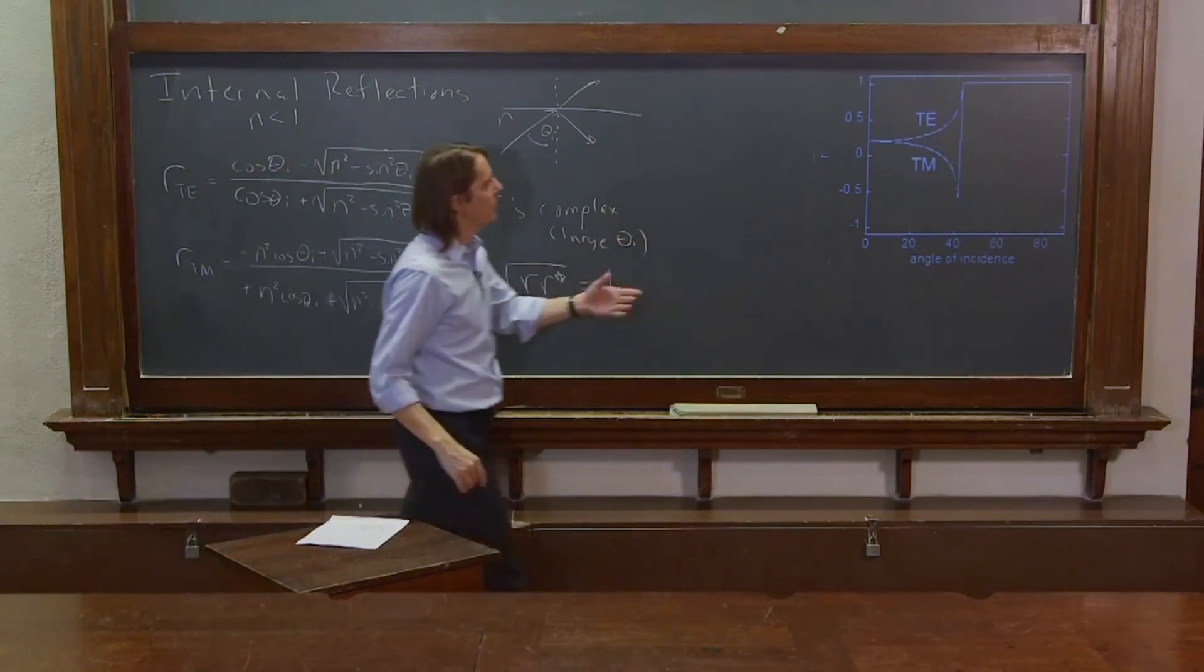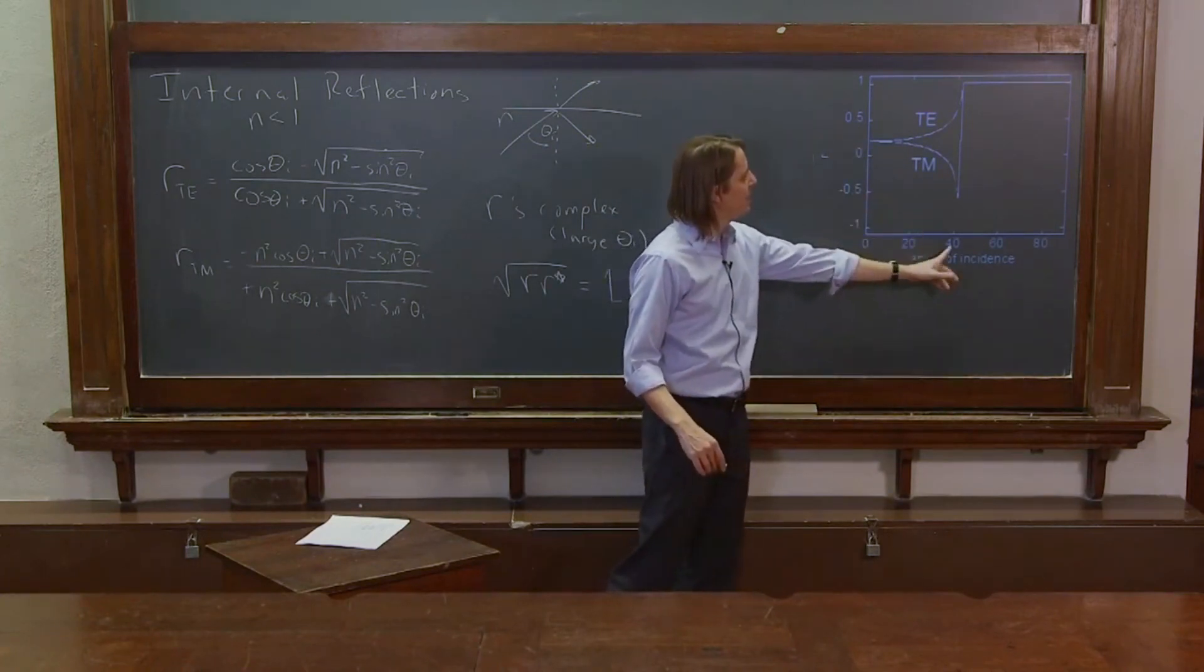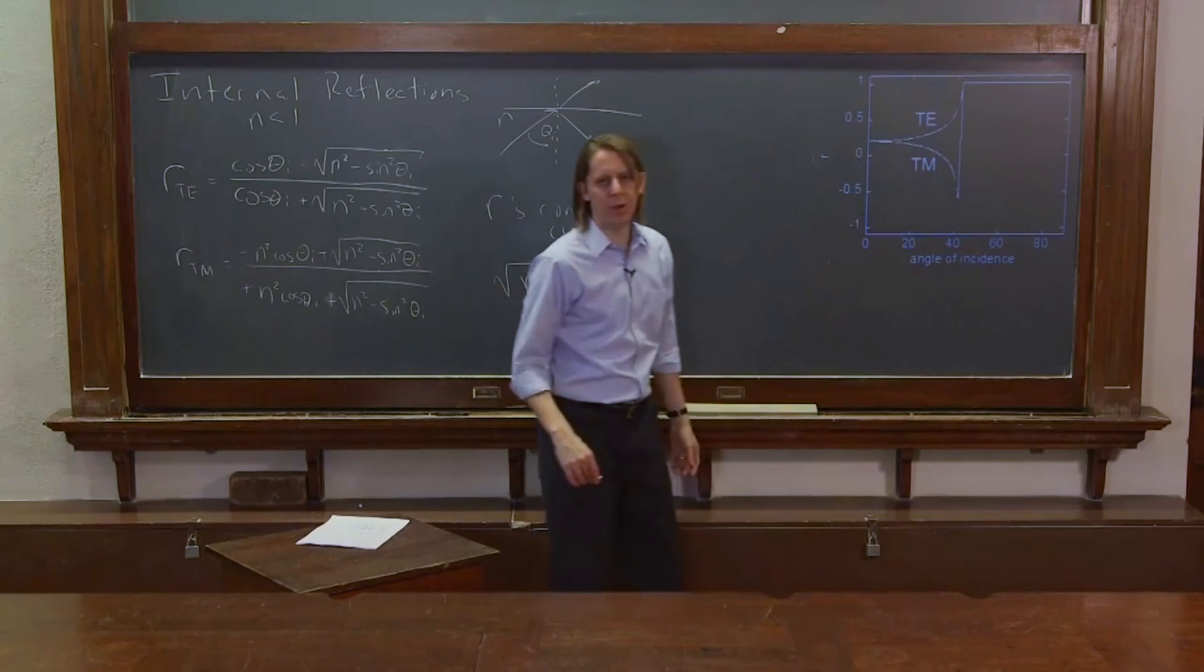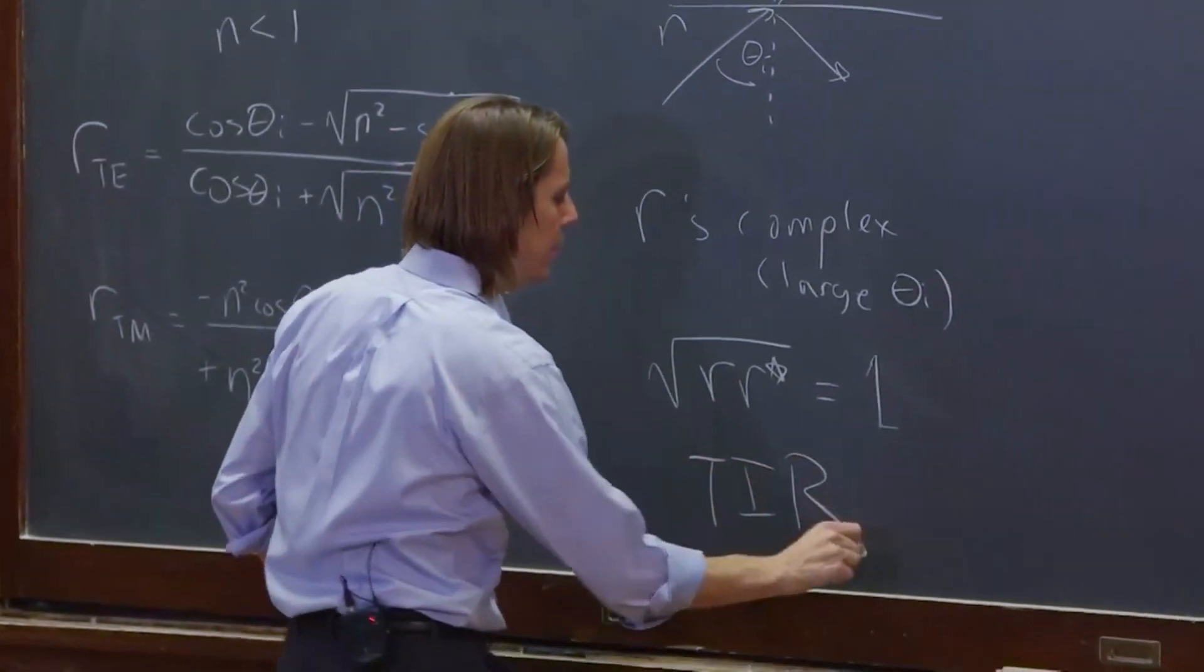And that's plotted here. So here we have a plot of little r TE and little r TM versus angle. And when you get beyond a certain angle, they just go to 1. And that was total internal reflection, which I may have abbreviated like that.